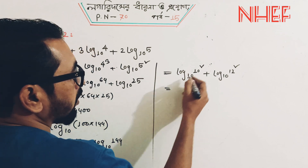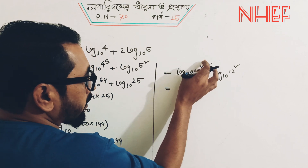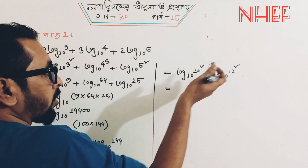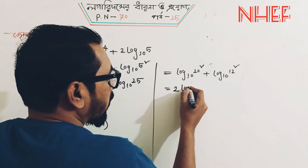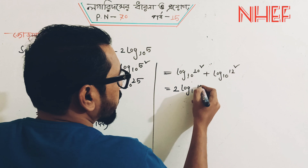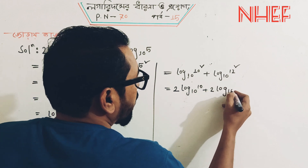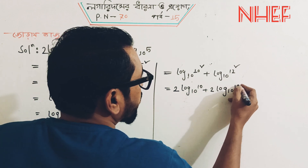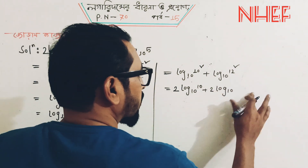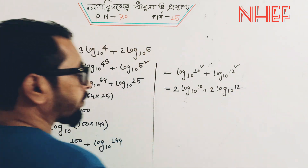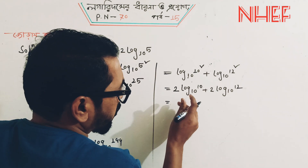Let's check what we have here. If you have a power here, then log A starts. So, let me say 2 log 10 base 10 plus 2 log 10 base 12. Let's check this.